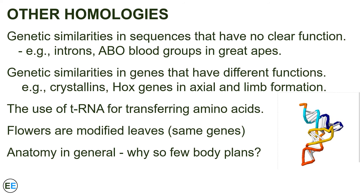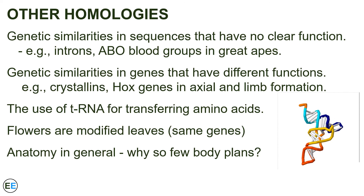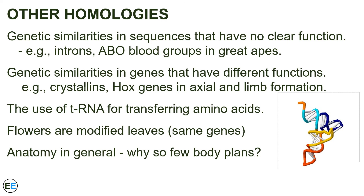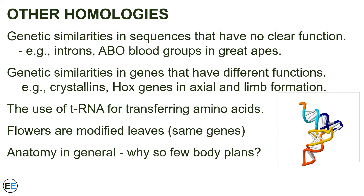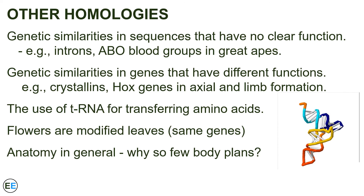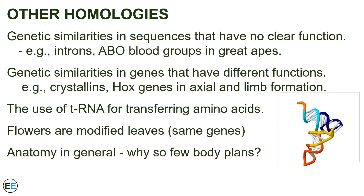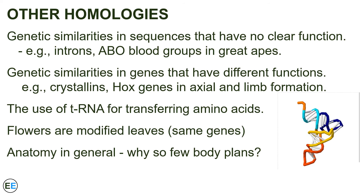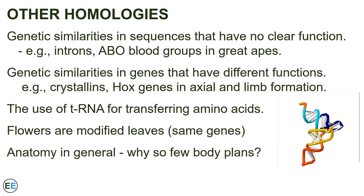In fact, if we think about anatomy in general, why are there so few different body plans? There are so many living things, yet so few different arrangements of bones and bodies. This power of ancestry prevents us from seeing some analogies we might otherwise expect. We don't see any vertebrates with more than two pairs of limbs like insects have, or any mammals with feathers like birds have. It's not that those traits wouldn't be functional — it's that the history of life prevents those adaptations.